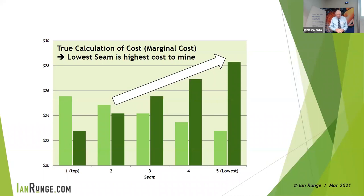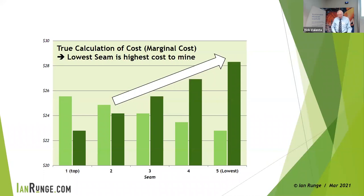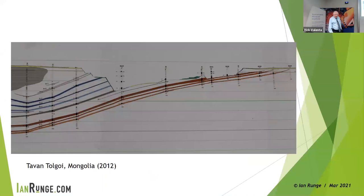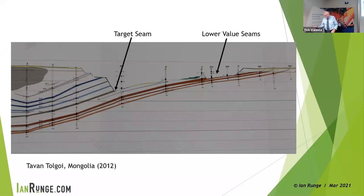What if the coal characteristics of those seams were different? They will be — maybe some are coking coal and some thermal. Do you think it might impact the design of your processing plant? If the mining side gets this wrong, you have to design the plant for one kind of coal or the other, and it's hard to change the plant after it's built. Here's actually a cross-section from Tavan Tolgoi in Mongolia — the prep plant designed by Sedgman. In that case the target seam was one in the middle of the sequence — coking coal — whereas the lower seams were less valuable. Not mining those lower seams on the way through meant all the waste had to be hauled out of the pit, adding some cost.